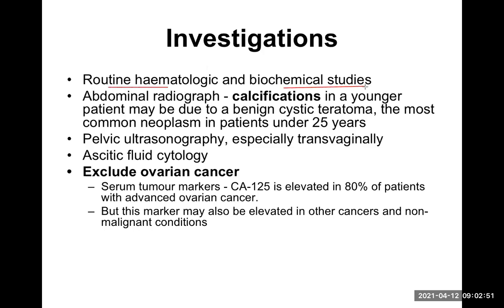For investigations, routine hematological and biological studies should be done to rule out malignancy and complications like infection — including CBC, total count, differential count, ESR, liver function tests, renal function tests, and electrolytes. An abdominal X-ray or radiograph can show calcification, especially in dermoid cyst or benign cystic teratoma, which is the most common neoplasm in younger age. These are called dystrophic type of calcifications. Pelvic ultrasound is also a routine investigation.